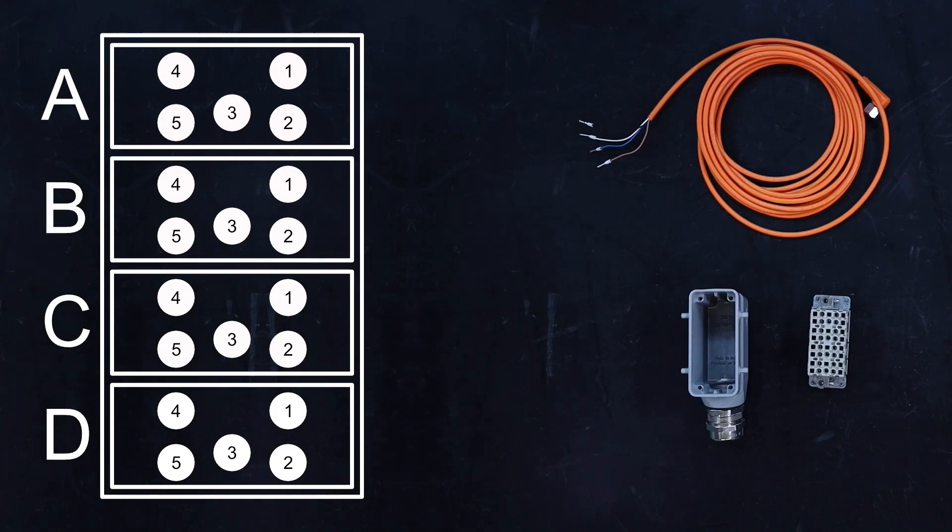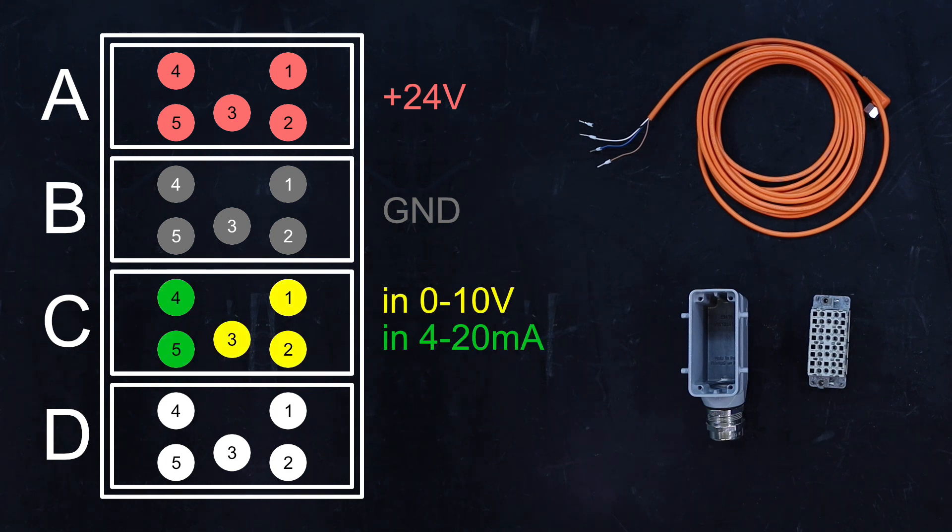On the inlet you can find four terminal blocks with five terminals. They are A plus 24 volt, B ground, C analog inputs, the first three 0-10 volt, pin 4 and 5 with 4 to 20 milliamps, and D the analog outputs. There are two with 4 to 20 milliamps.